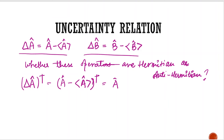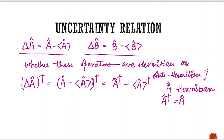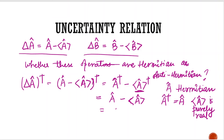We can take the individual adjoint of each term in ΔA. Since operator A is Hermitian, its adjoint is equal to A, and its expectation value is purely real. Since it is a real value, its adjoint is the same as its original value. So ΔA adjoint equals ΔA — it is a Hermitian operator.